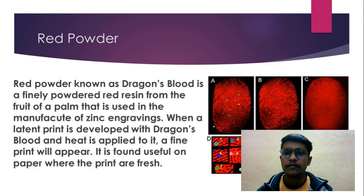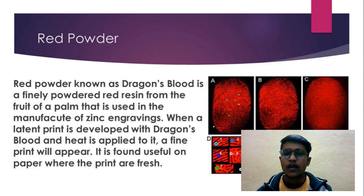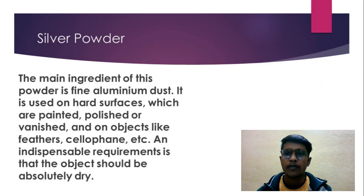Red powder — red powder, known as dragon's blood, is a finely powdered red resin from the fruits of a palm, used in the manufacture of zinc engravings. When a latent print is developed with dragon's blood and heat is applied to it, a fine print will appear. It is found useful on paper where the prints are fresh.